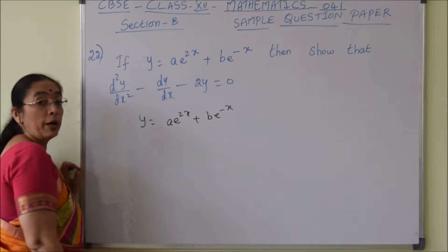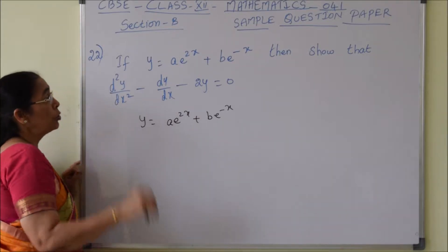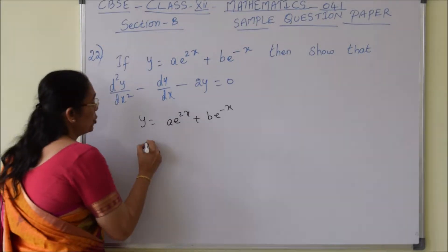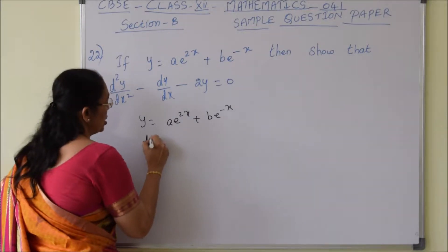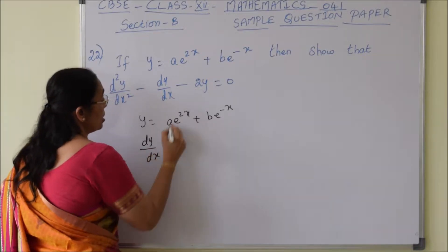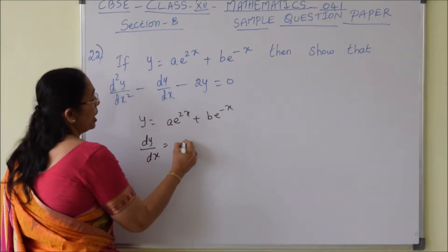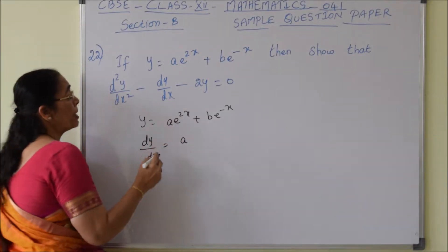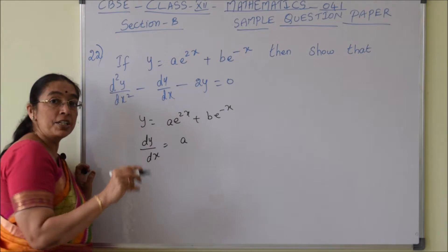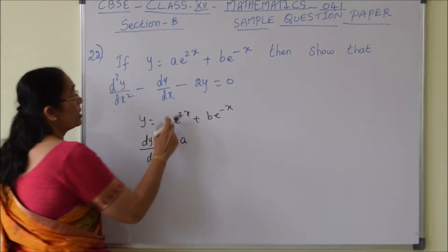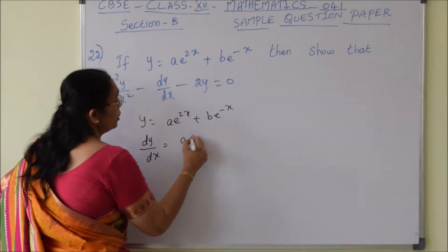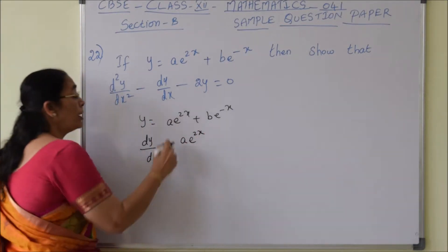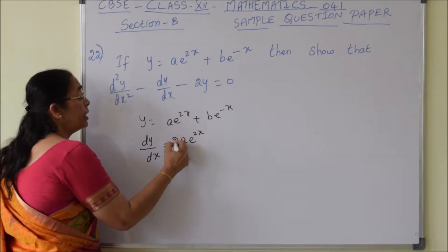We have to do two times differentiation. First, let us do the first differentiation. dy/dx: a is constant, and e^x differentiation is e^x, so e^(2x) differentiation is e^(2x) into 2.